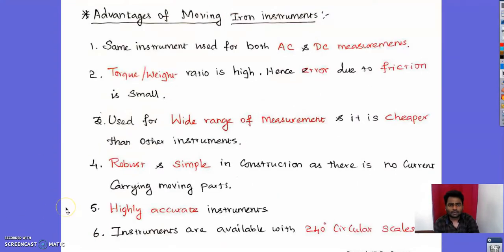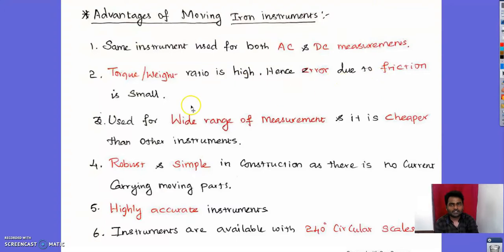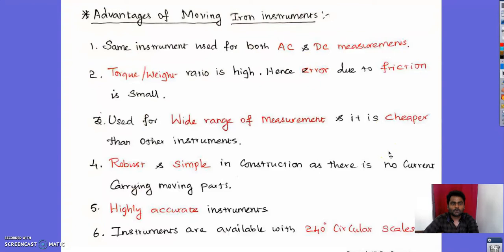The advantages of moving iron instruments are: the same instrument can be used for both AC and DC measurement; the torque-to-weight ratio is high, so friction error is very small; it is suitable for a wide range of measurements; it is cheaper than other instruments; the construction is simple and robust since no current flows in the moving part; it is highly accurate; and instruments are available with 240-degree circular scales.